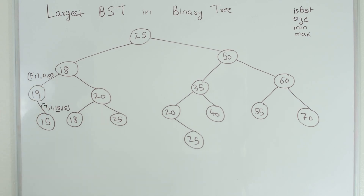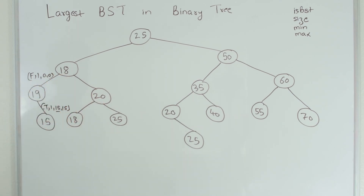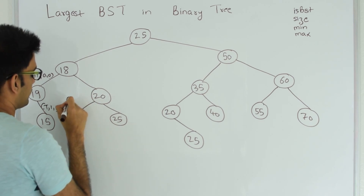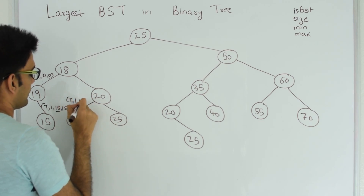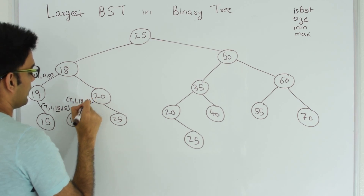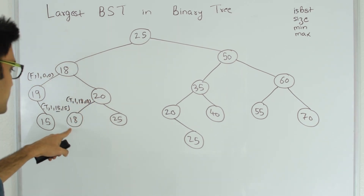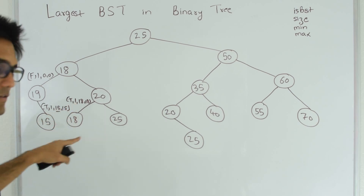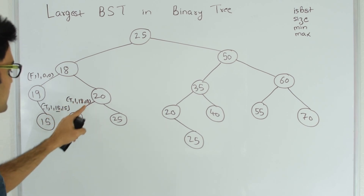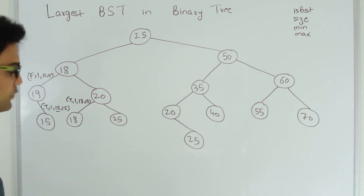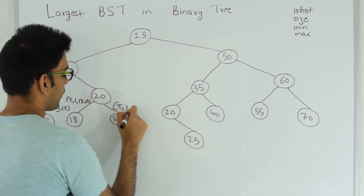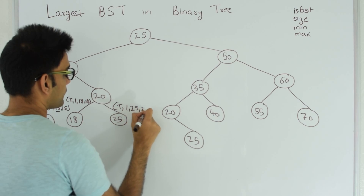Node 18 returns to 20: true, 1, 18, 18 — meaning the subtree with 18 as root is a binary search tree of size 1 with minimum and maximum both 18. Node 25 returns true, 1, 25, 25 to node 20.